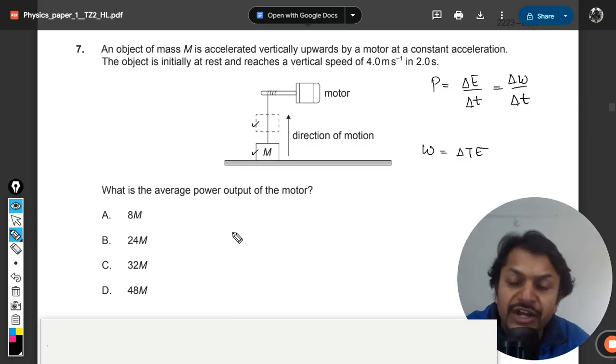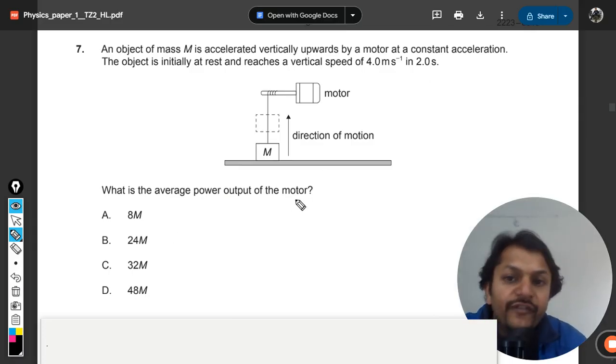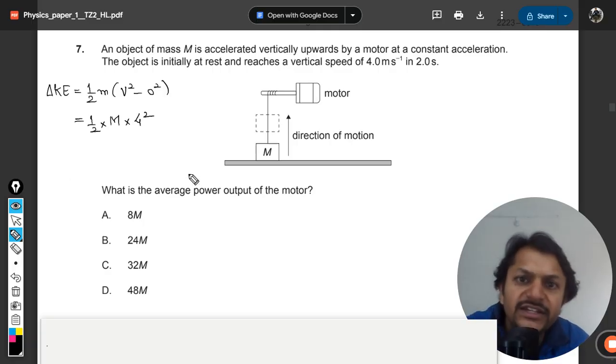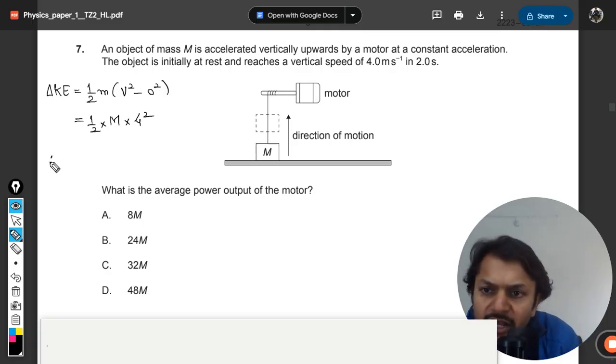The kinetic energy is changing and the potential energy is also changing. In this question, first we will find the change in kinetic energy: ΔKE = ½mv² - 0. So ½m, v is 4, so that will be 4². This gives us 8m as the change in kinetic energy.